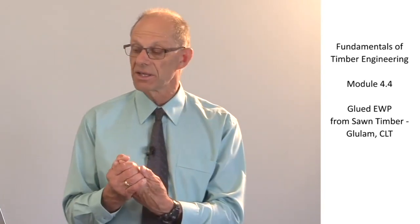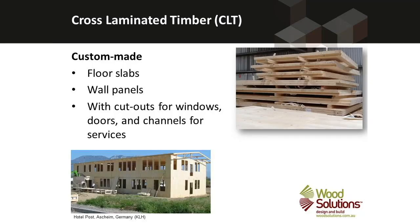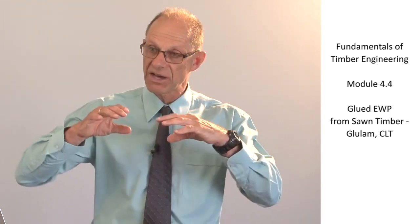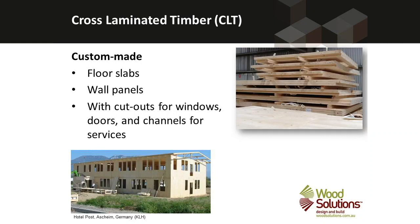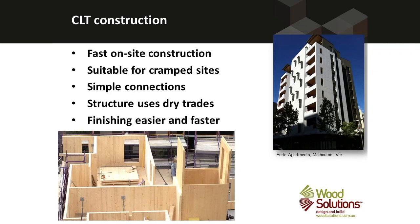Cross laminated timber is custom made — when a designer specifies a panel of a certain size, that is the size panel that is manufactured. We can manufacture wall panels and floor panels, and all of them perform in much the same way. They are good at carrying out-of-plane loads and in-plane loads, giving capacity to carry lateral forces as structural elements. The whole building arrives as a flat pack, and CLT construction is simply assembling the pre-manufactured panels on site. The panels already have cut-outs for windows, and can have chasing for wiring and plumbing, so fit-out of the building is accelerated.